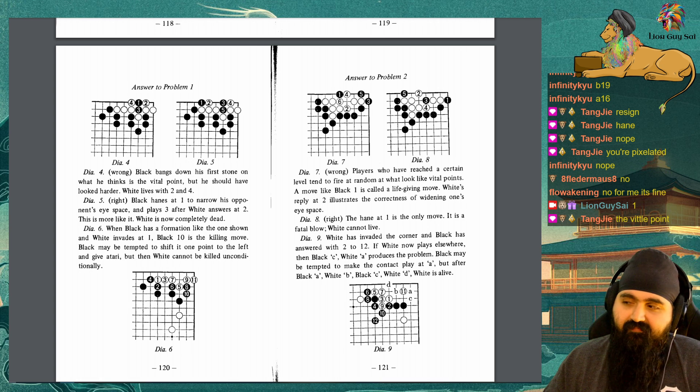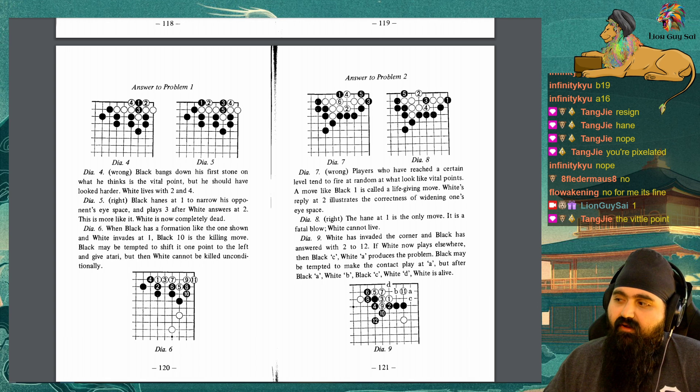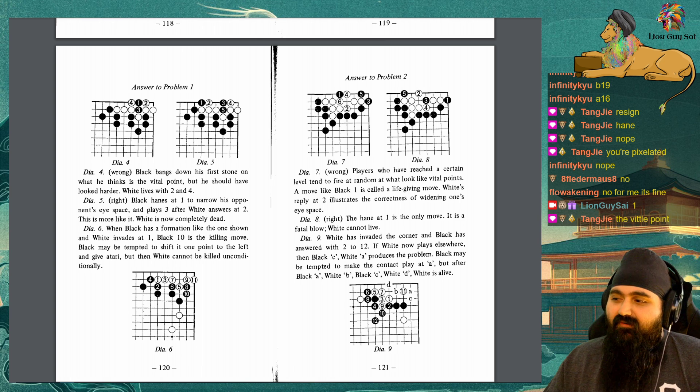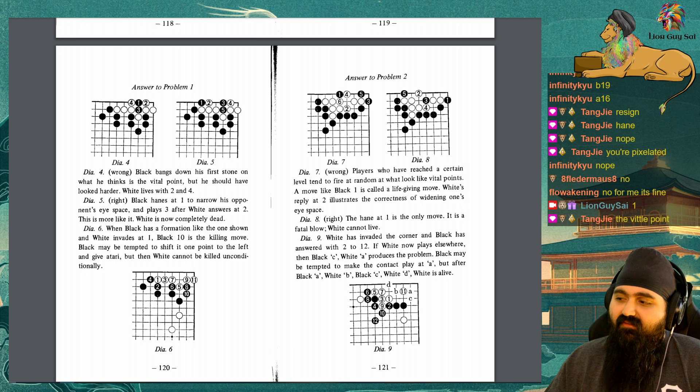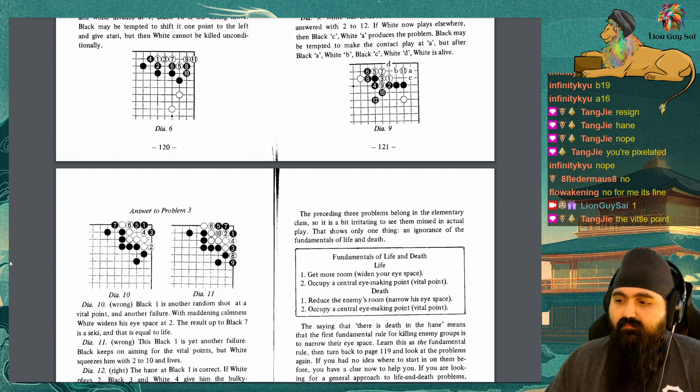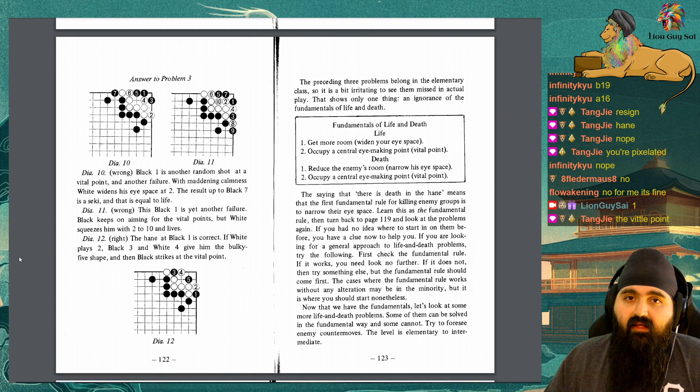Answer to Problem 2. Diagram 7: Wrong. Players who have reached a certain level tend to fire at random at what looks like vital points. A move like Black 1 is called a life-giving move. White's reply at 2 illustrates the correctness of widening one's own eye space. Diagram 8: Right. The honey at 1 is the only move. It is a fatal blow. White cannot live. Diagram 9: White has invaded the corner, and Black has answered with 2 to 12. If White now plays elsewhere, then Black C, White A produces the problem. Black may be tempted to make the contact play at A, but after Black A, White B, Black C, White D, White is alive.